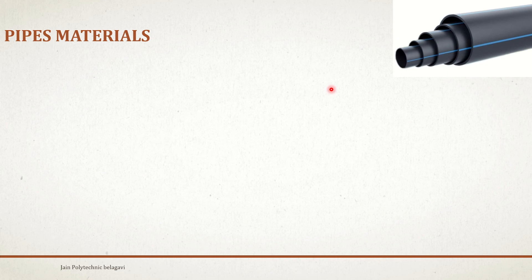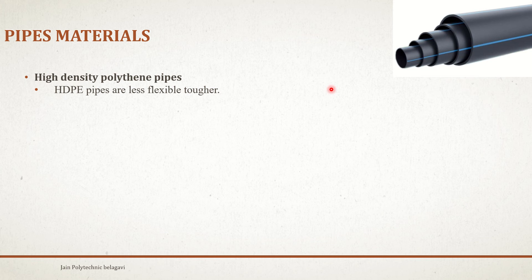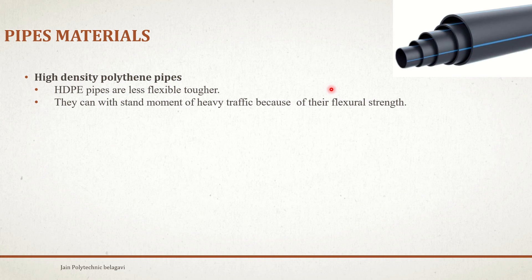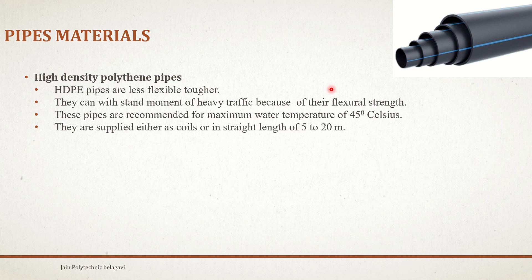Next we will go through high-density polyethylene (HDPE) pipes. These pipes are less flexible in nature and a little bit tougher. They can withstand movement of heavy traffic because of their flexural strength. They show slightly higher flexibility compared to regular plastic pipes. These pipes are recommended for a maximum water temperature of around 45 degrees Celsius and are supplied either as coils or in straight lengths of 5 to 20 meters.